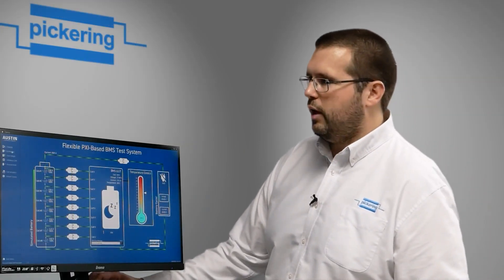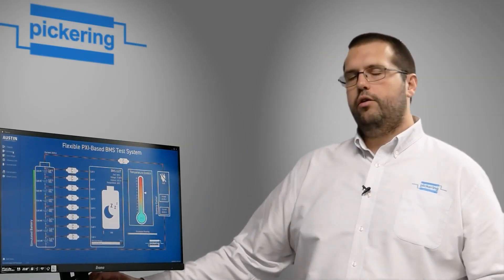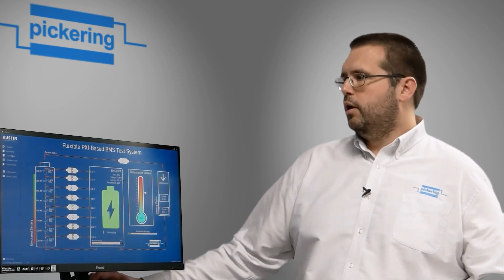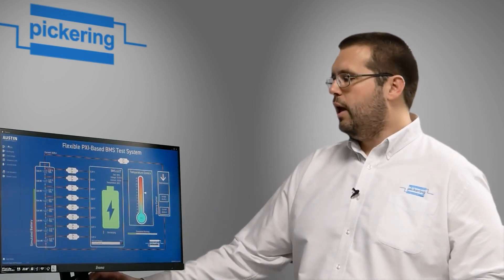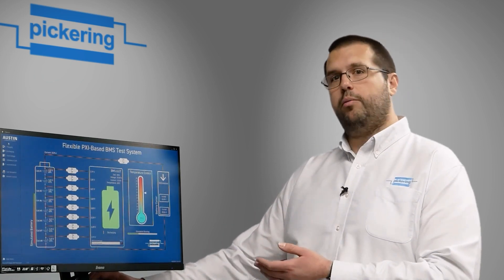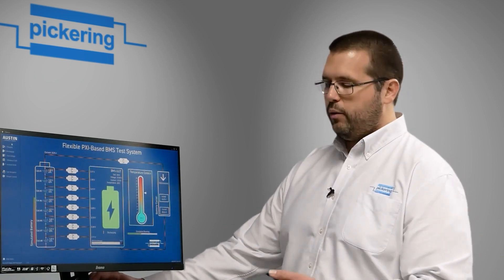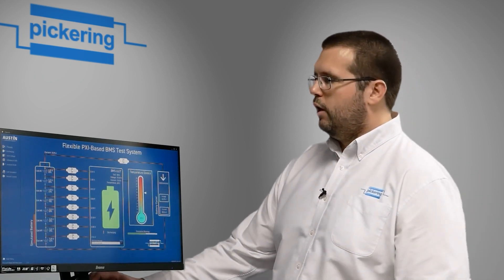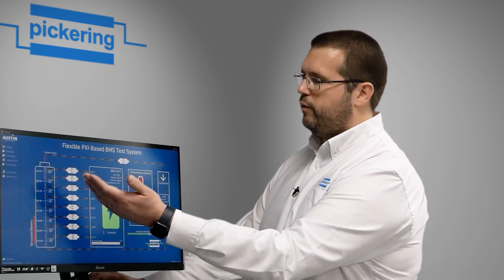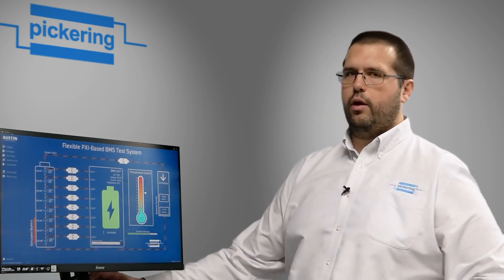Additionally, we can also simulate discharging so the cells are actually in use. Here again we have the cells connected to the BMS just like before, but now instead of being connected to a power supply to simulate charging, it's now connected to a power resistor module as a load. Here you can see current flowing from the cells into the load module.